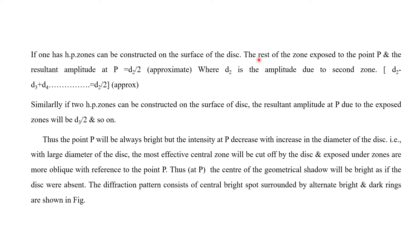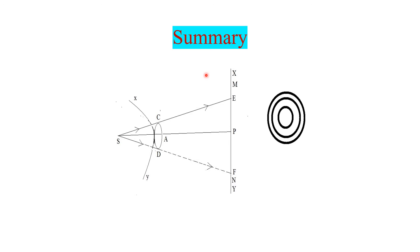The center of the geometrical shadow will be bright. Even when the disk is absent, the central zone remains bright. The diffraction pattern consists of a bright spot at the center surrounded by alternating dark and bright rings.